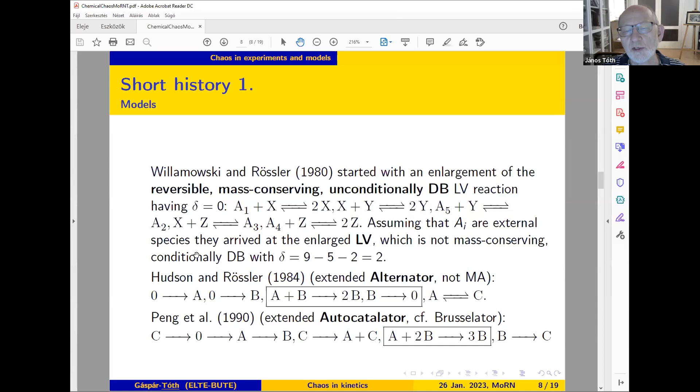What they did is they started from this chemically good example and destroyed it by taking away the external species AI, which may be considered constant concentration. Then they arrived at the enlarged Lotka-Volterra system I showed before, which is not mass conserving, has positive deficiency, and is only detailed balanced if certain equalities are fulfilled by the reaction rate coefficients.